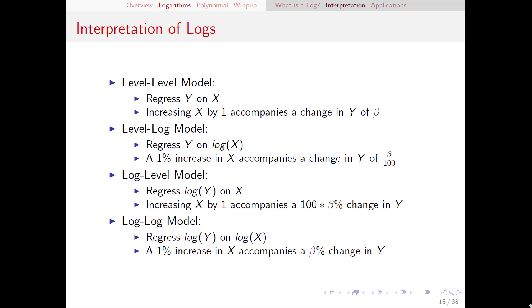If we don't use any logs at all that's what we call the level level model simply taking a regression of y on x. This is what we've been doing up to this point and that is the equation that I showed earlier. This interpretation is simply increasing x by 1 accompanies a change of y of beta.